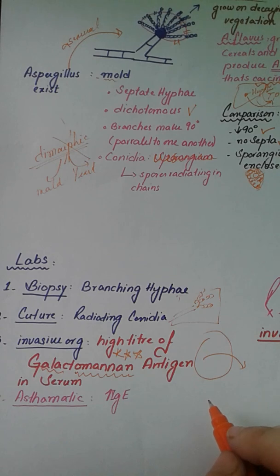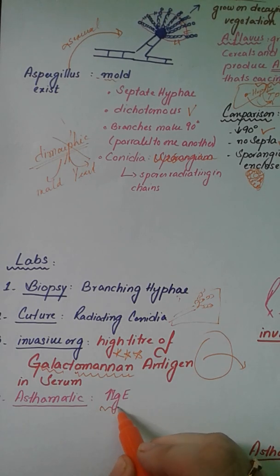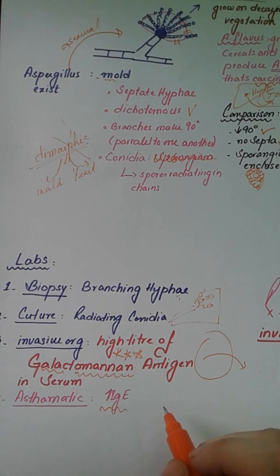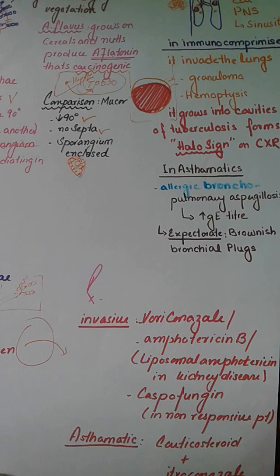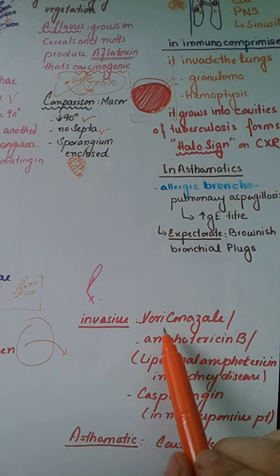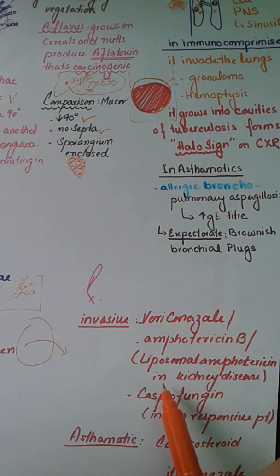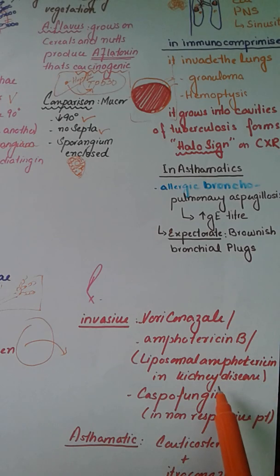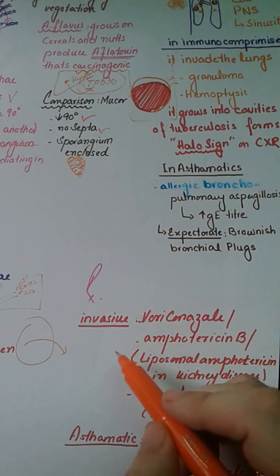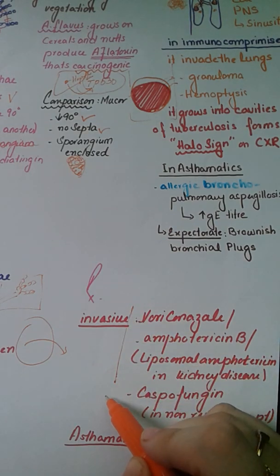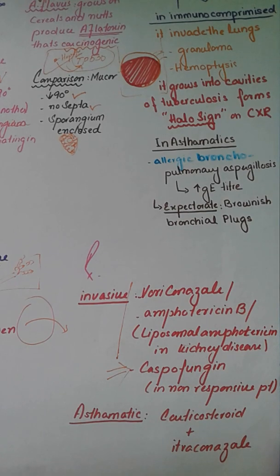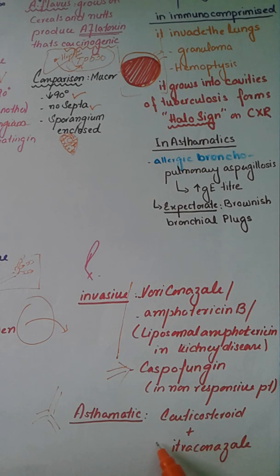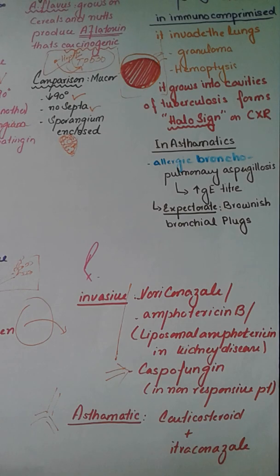In asthmatics with asthma-like symptoms, we check IgE titers, and if they are expectorating brownish mucus plugs we can also identify hyphae in them. For treatment of invasive disease, voriconazole or amphotericin B is used. If the patient has kidney disease, we shift to liposomal amphotericin B, or caspofungin if unresponsive. For asthmatics, corticosteroids are combined with itraconazole to reduce bronchial inflammation and treat the primary fungal infection.